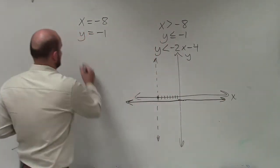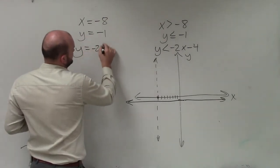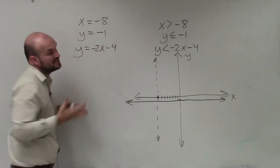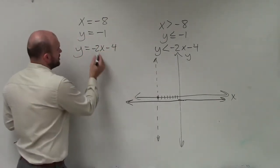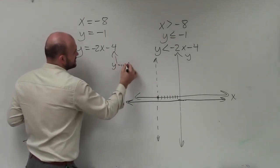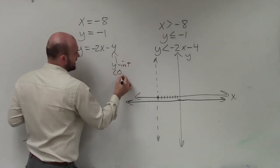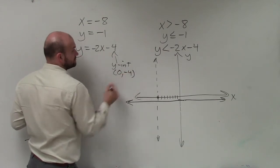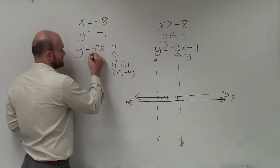And now the last one is y equals negative 2x minus 4. Now, ladies and gentlemen, this is in slope-intercept form. So therefore, I know that this is my y-intercept, which is a coordinate point which lies on the y-axis.